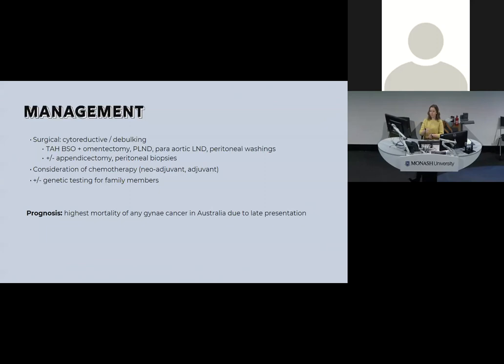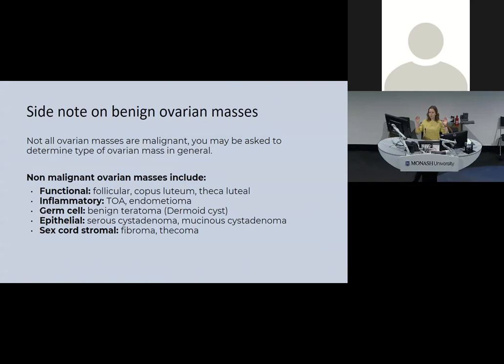Management of ovarian cancer is primarily surgical: abdominal hysterectomy, bilateral salpingo-oophorectomy, and omentectomy — since ovarian cancer often spreads to the omentum first. Pelvic and paraaortic nodes, peritoneal washings for cytology, appendix, and peritoneal biopsies are also taken. Many of these patients will also have carboplatin-based chemotherapy, either neoadjuvant (before surgery) or adjuvant (after). Genetic testing for BRCA or Lynch syndrome should be considered where indicated. Ovarian cancer has the highest mortality of any gynaecological cancer, largely due to late presentation.